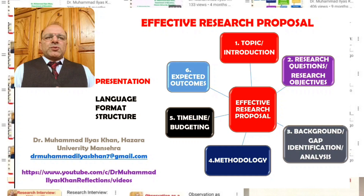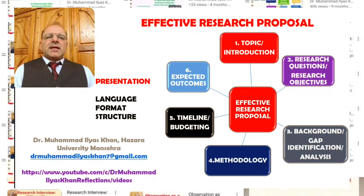The third section that an effective research proposal should have is one based on identifying the background, generally through a literature review in the area in which the research is conducted, along with a gap identification. Effective research proposals clearly identify a research or knowledge gap, and that gap is not only identified but critically analyzed, ultimately establishing the need for further research in that particular area. Background, gap identification, analysis, and rationale for the conduct of the current research are all very important parts of an effective research proposal.